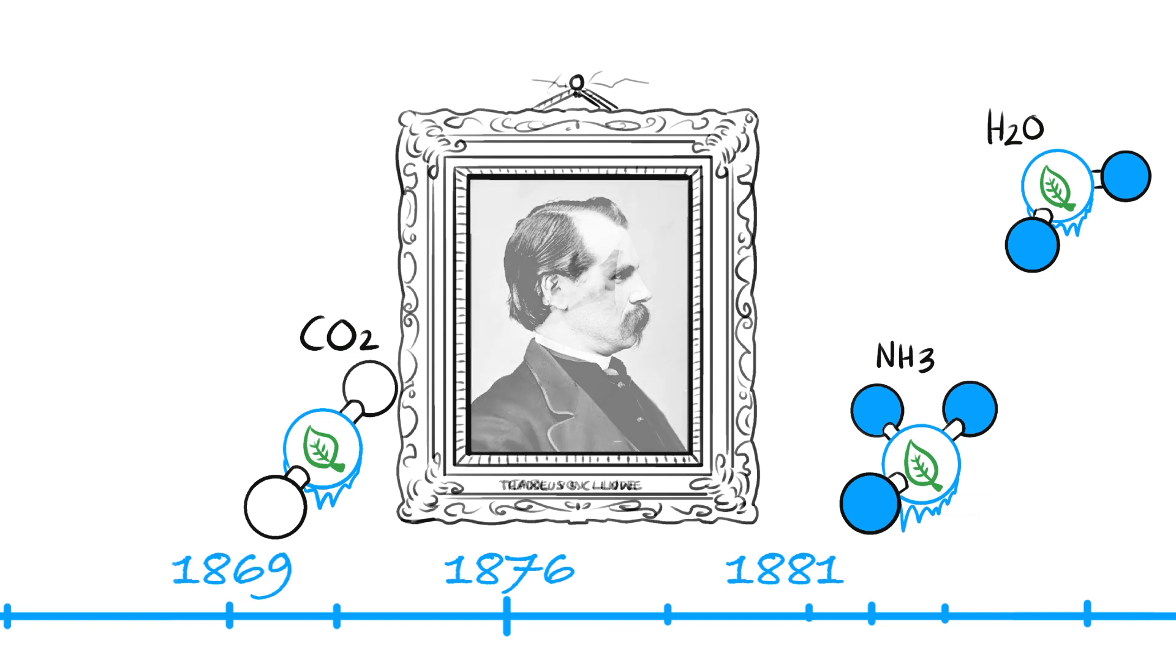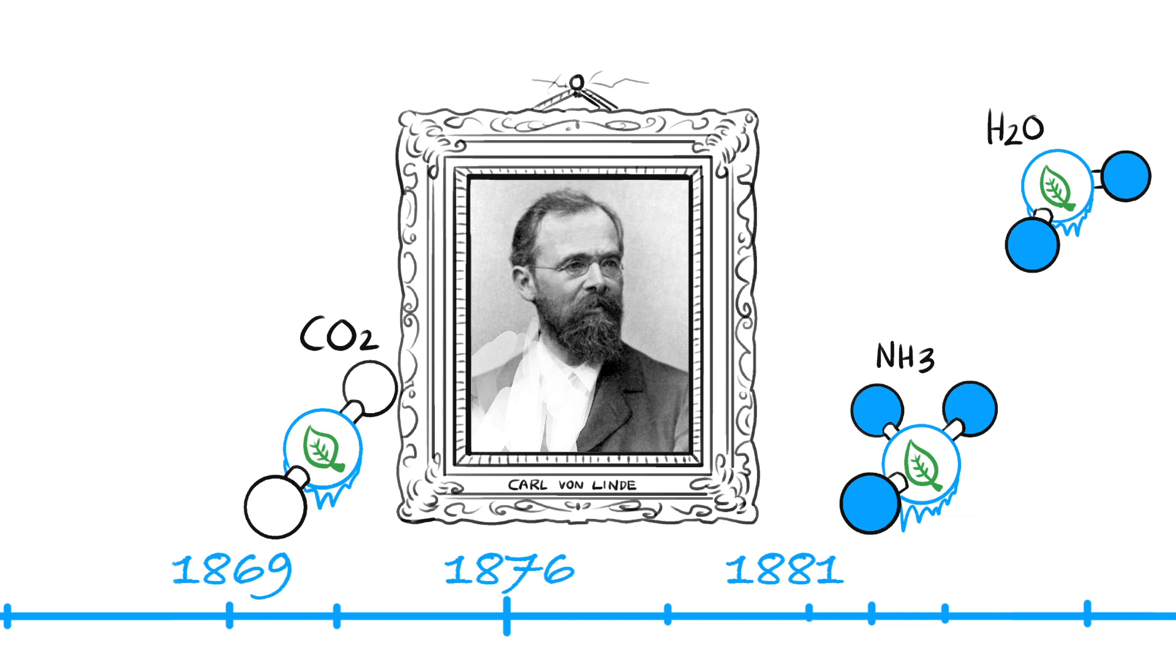In 1876, Carl von Linde built the first refrigeration machine using ammonia in Munich. This led to the development and construction of the first large cold storage facilities in 1881.